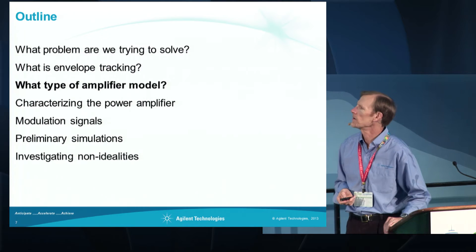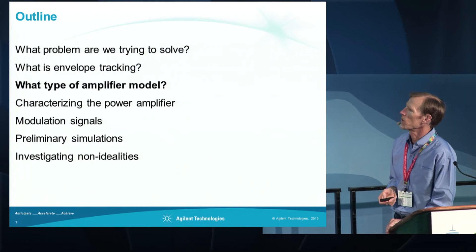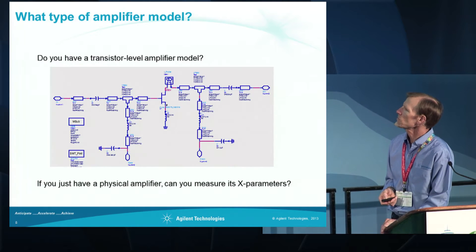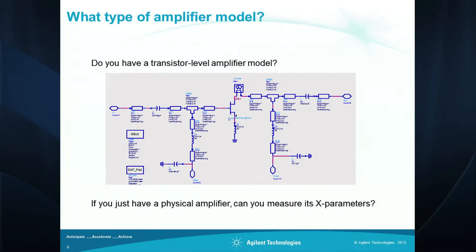Next I'm going to talk about the types of amplifier models that we can deal with. The simplest case is if you have a transistor-level amplifier in ADS — this is the easiest case to deal with. You can run harmonic balance simulations on such an amplifier, adjust the drain bias, look at the characteristics of the power amplifier, and simulate envelope tracking fairly easily.